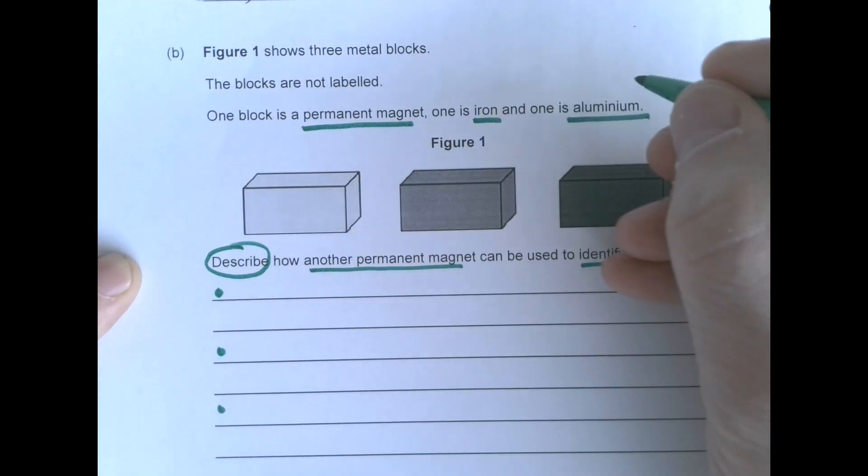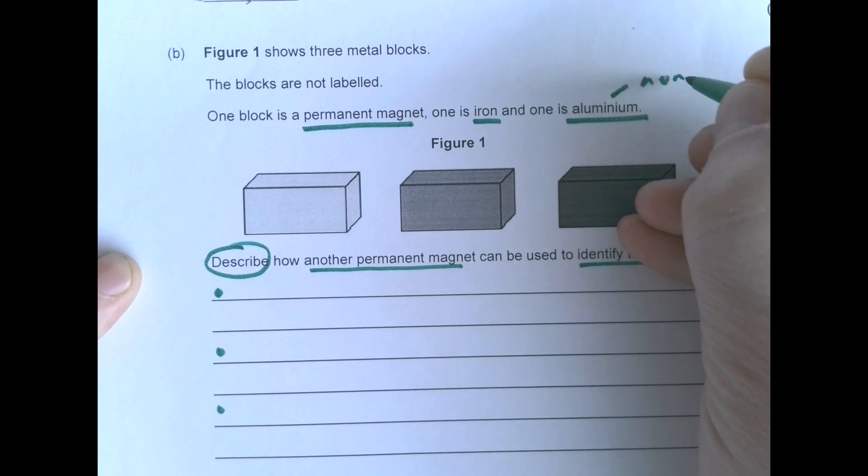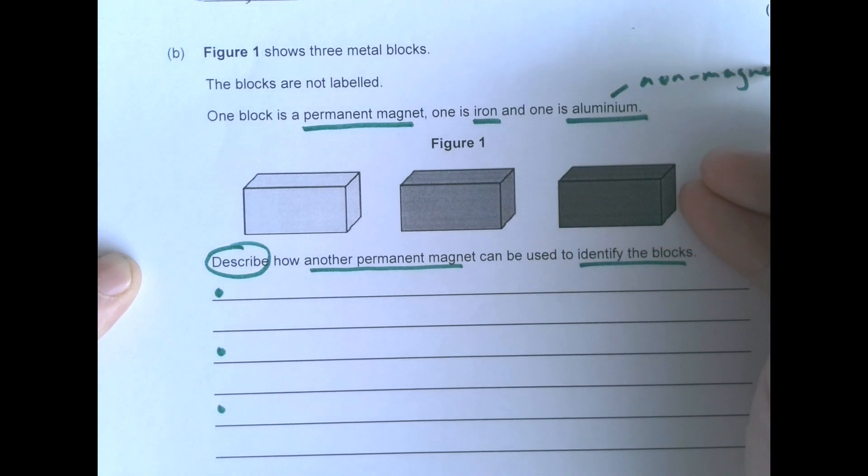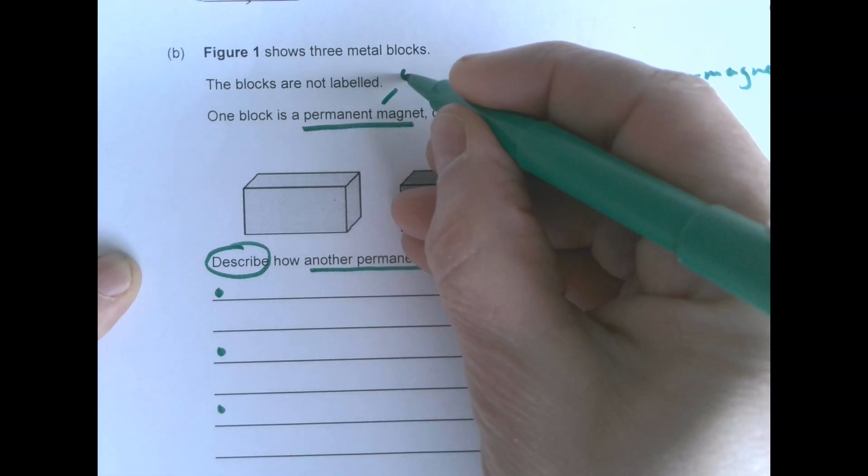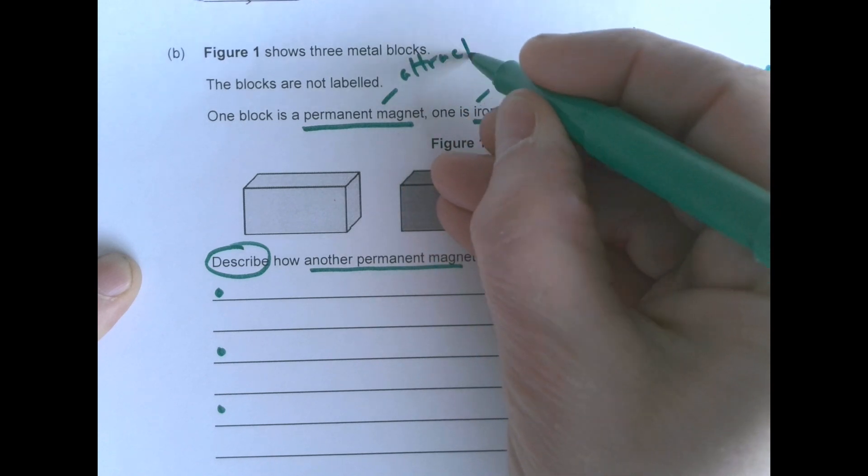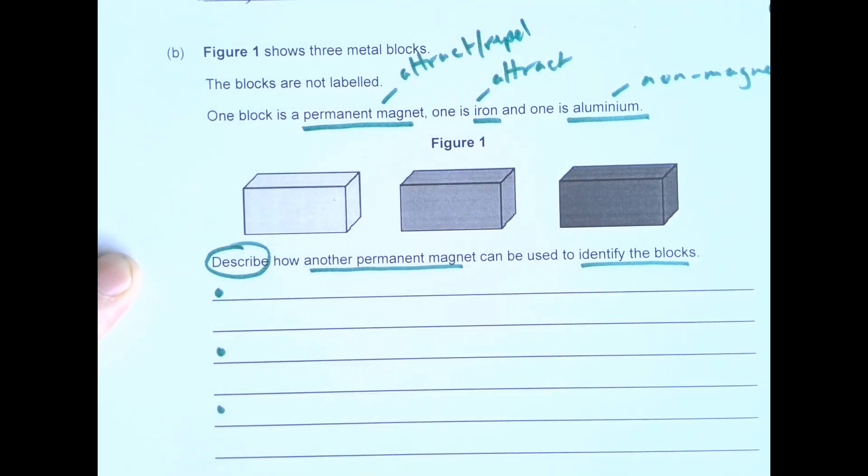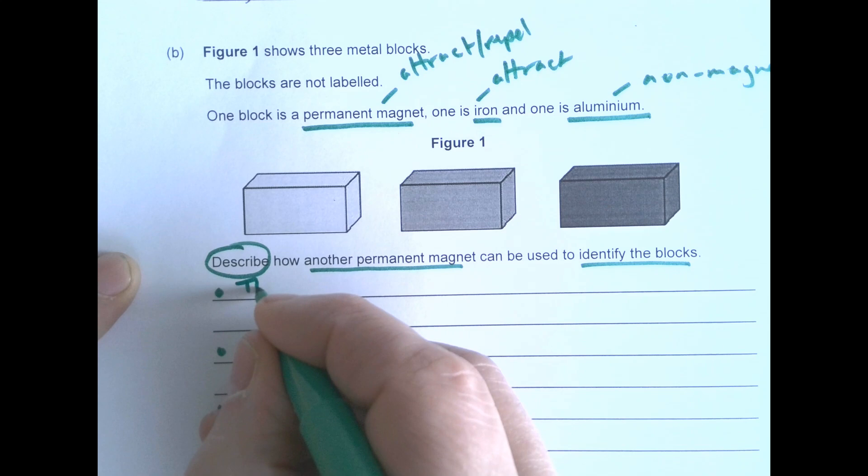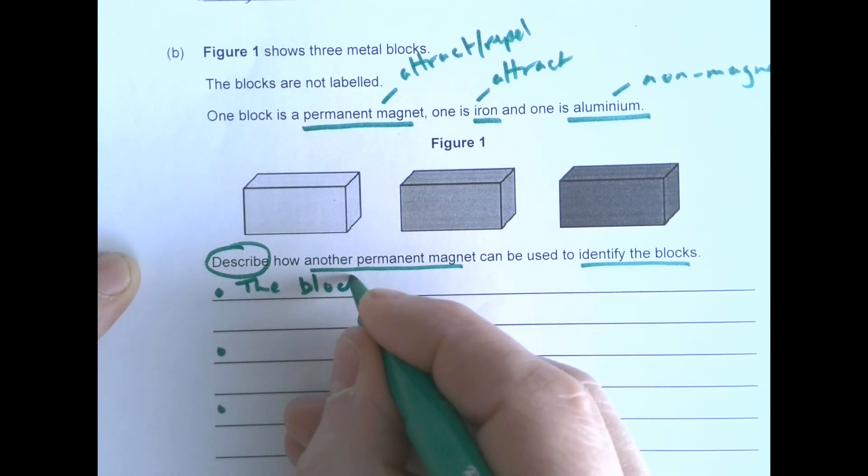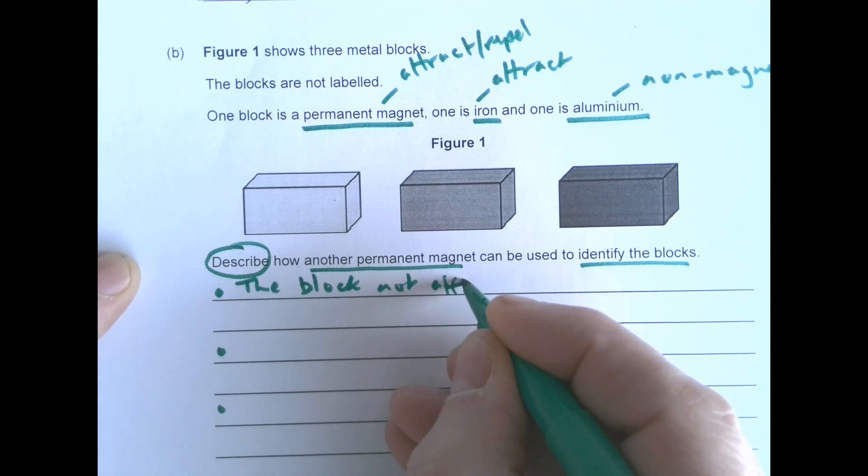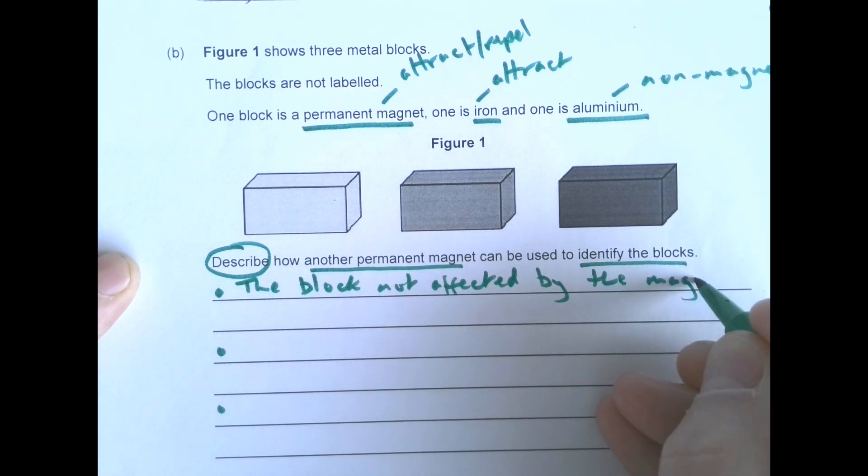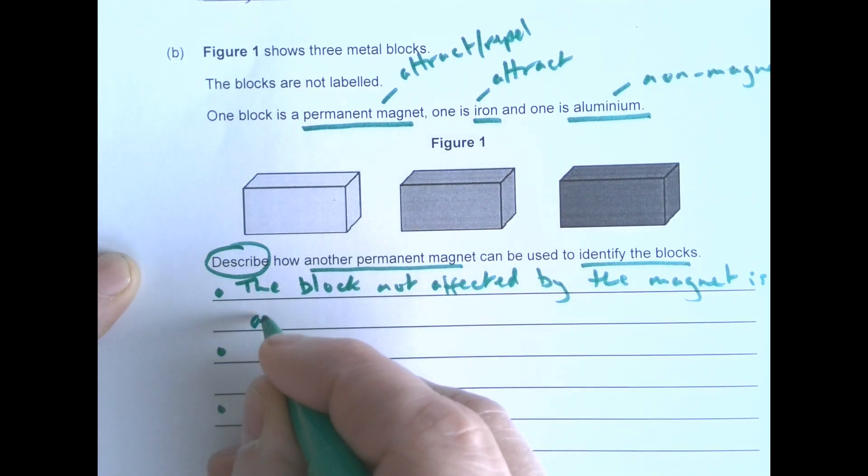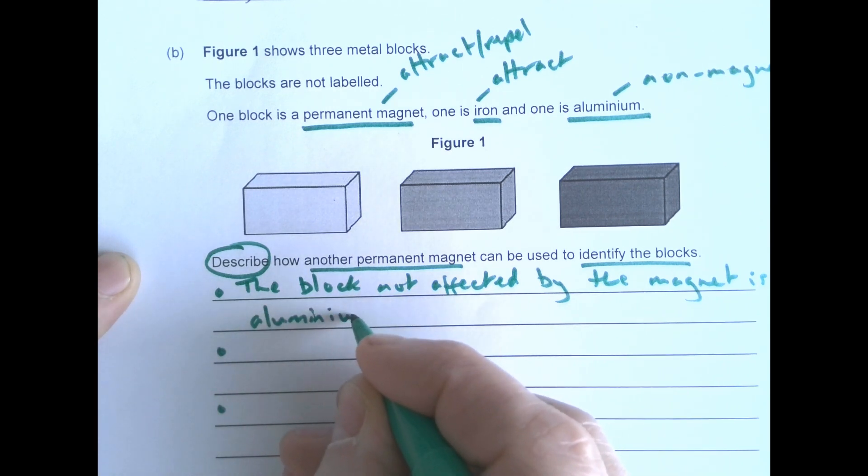First of all, we know that aluminium is not magnetic. So non-magnetic. Iron will always attract. Permanent magnet will attract or repel depending on the end, depending on the poles you've got. Okay, so that's what we're going to say. The block not affected by the magnet is aluminium.